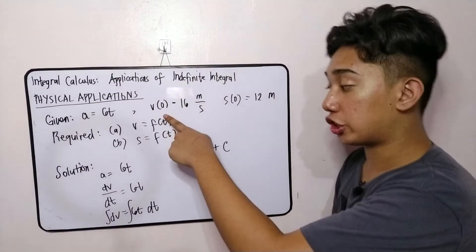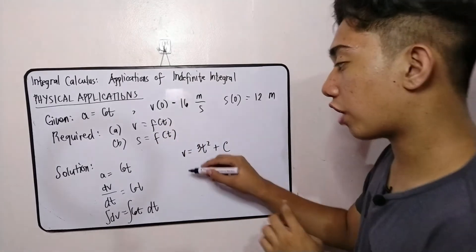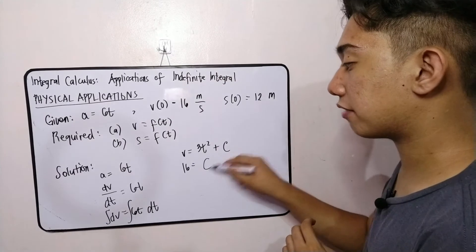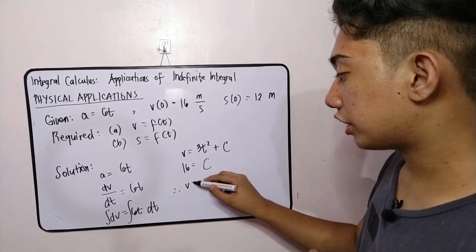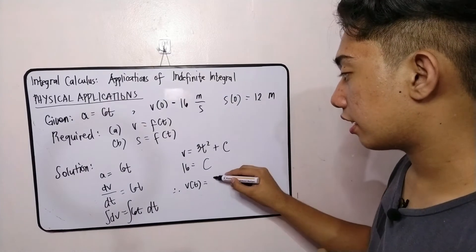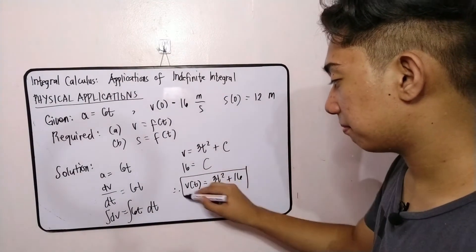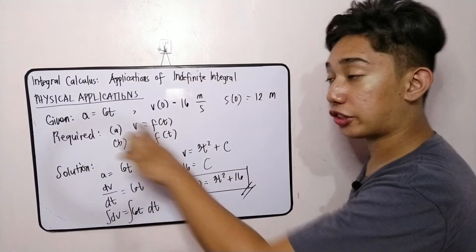Given your initial condition as v of 0 is equal to 16, then we will substitute 16 for our velocity. And for that time is 0, so we will cancel. So our value of c is 16. Therefore, our velocity function is 3t squared plus 16. So this is our final answer for letter A.